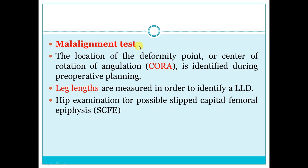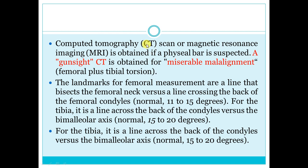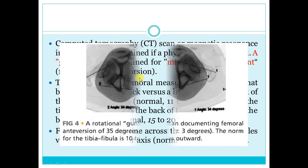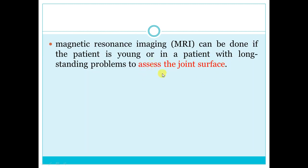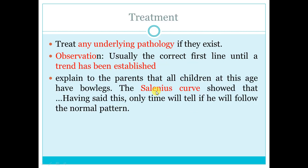CT scanogram detects the malalignment test, the center of deformity, and center of rotation — details covered later. It also detects leg-length discrepancy. Don't forget to exclude SCFE. CT with gun-sight shot detects miserable malalignment and femoral anteversion. MRI is used if there is significant joint depression, to detect its size and location.